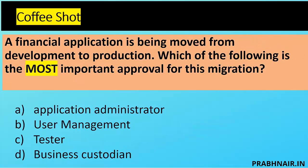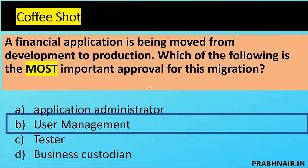Question 9 — another 'most' example: A financial application is being moved from development to production. Which of the following is the most important approval for this migration? Option A: application administrator — they manage as custodians. Option B: user management — they are the ones who finally approve cases and approve the application for use in production. Option C: tester — limited to testing only. Option D: business custodian — works on behalf of business management. The answer is B: user management, because the question asks for 'most important.'